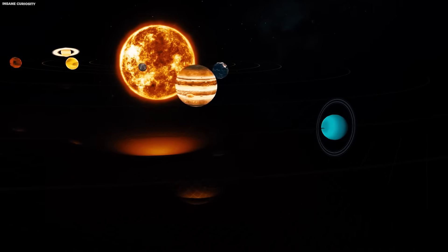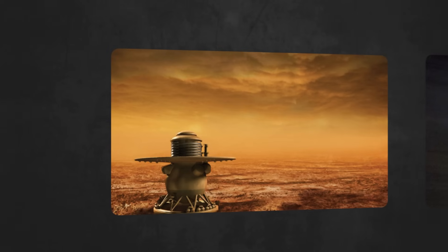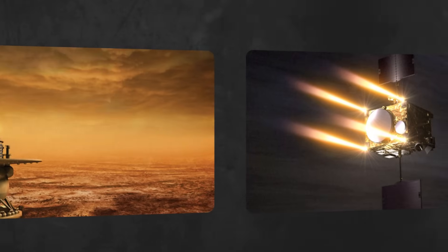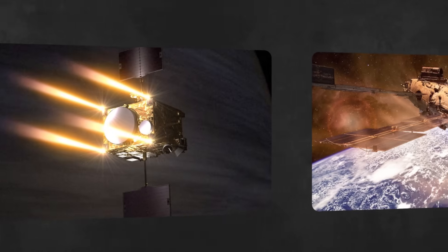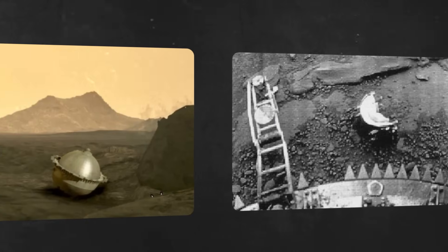The Soviet space program first attempted to visit Venus in 1961. Over the succeeding decades it launched scores of probes at the planet, sometimes referred to as Earth's twin.